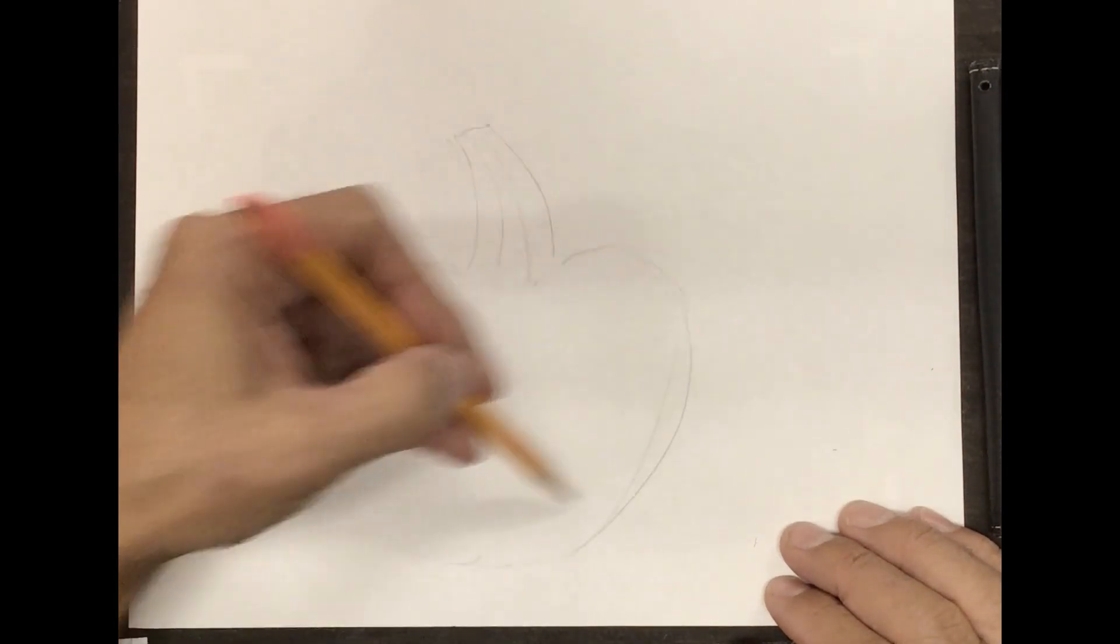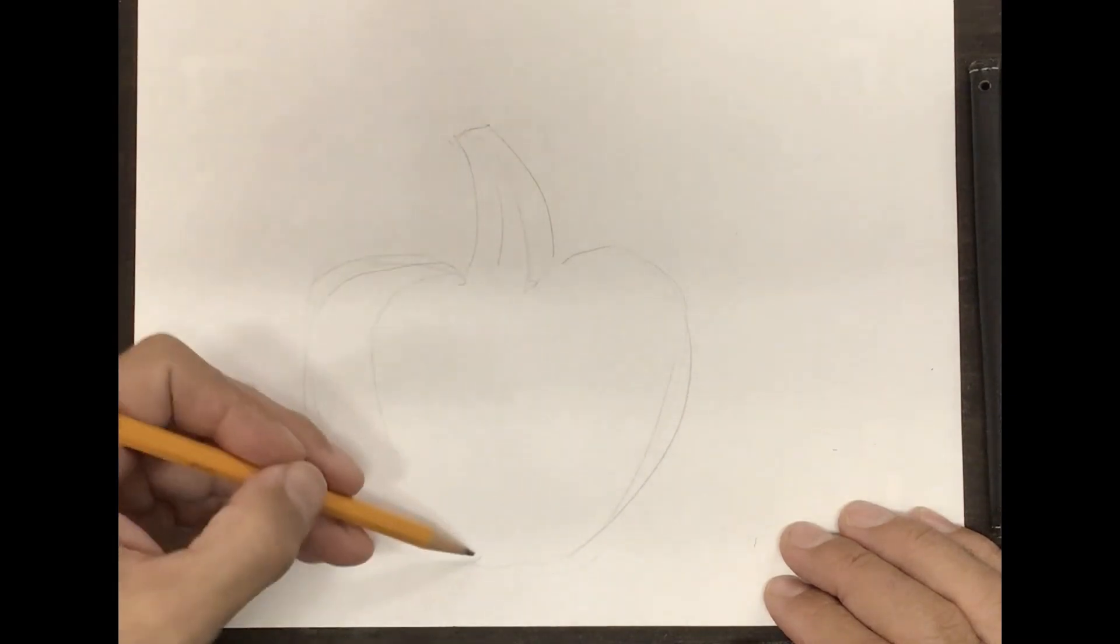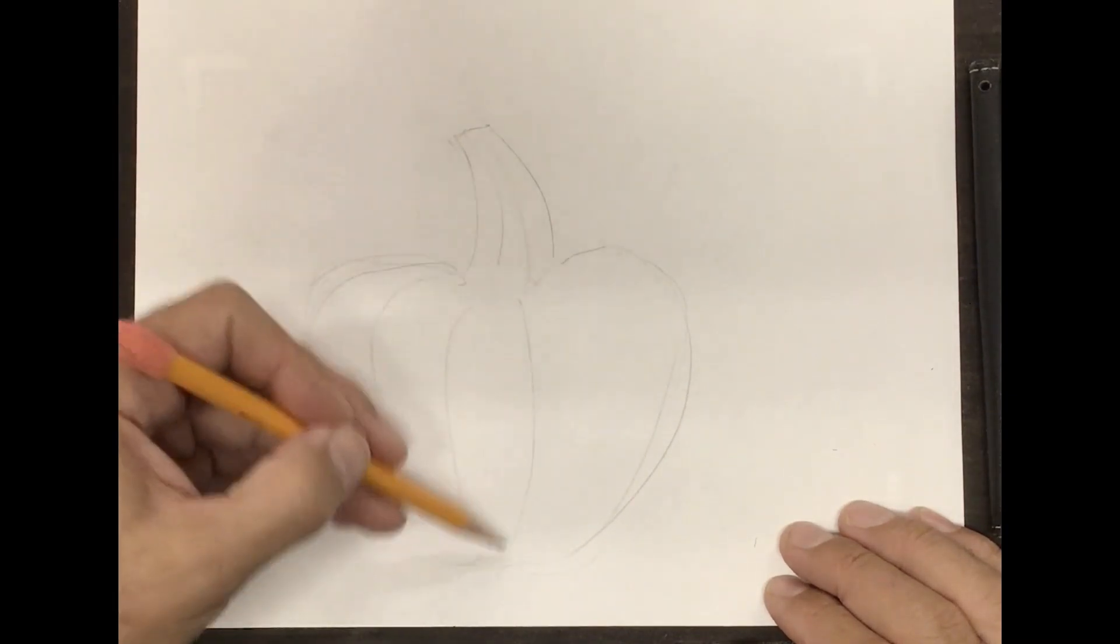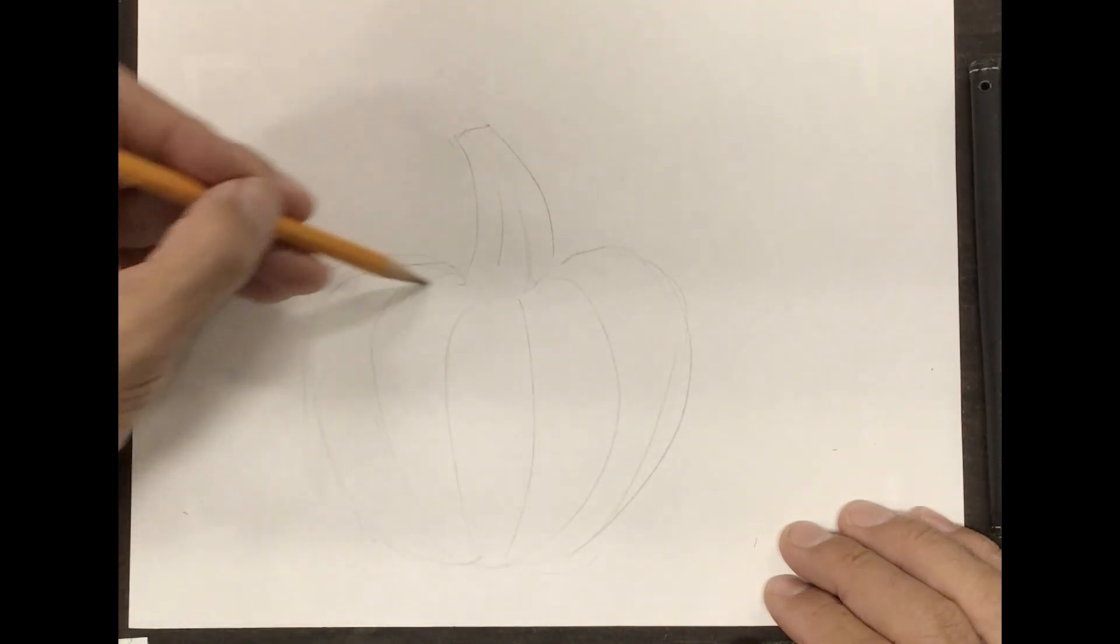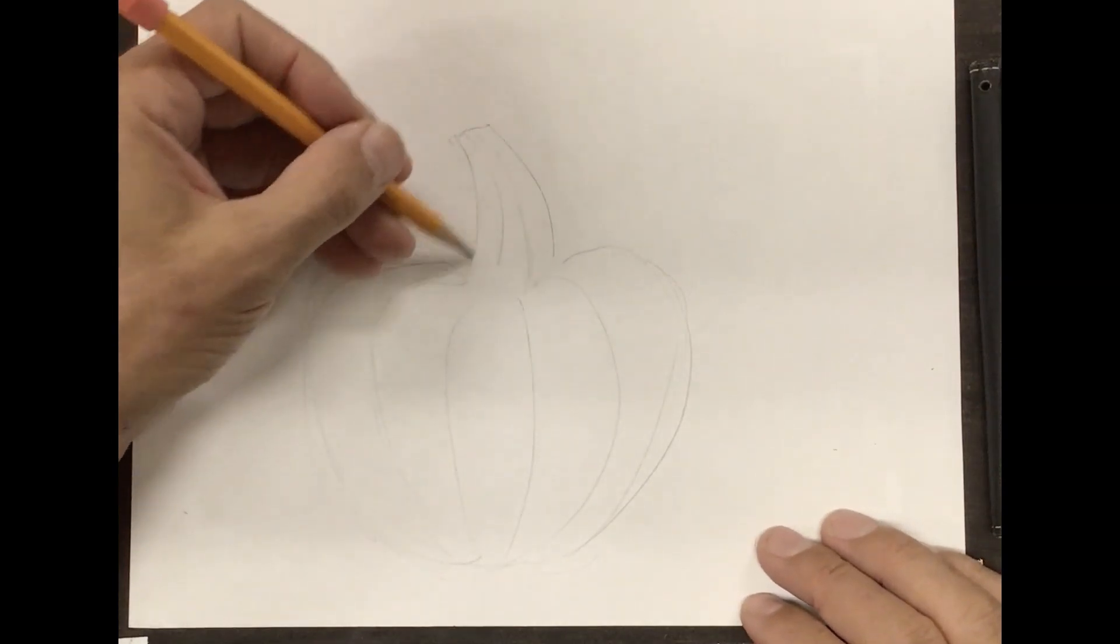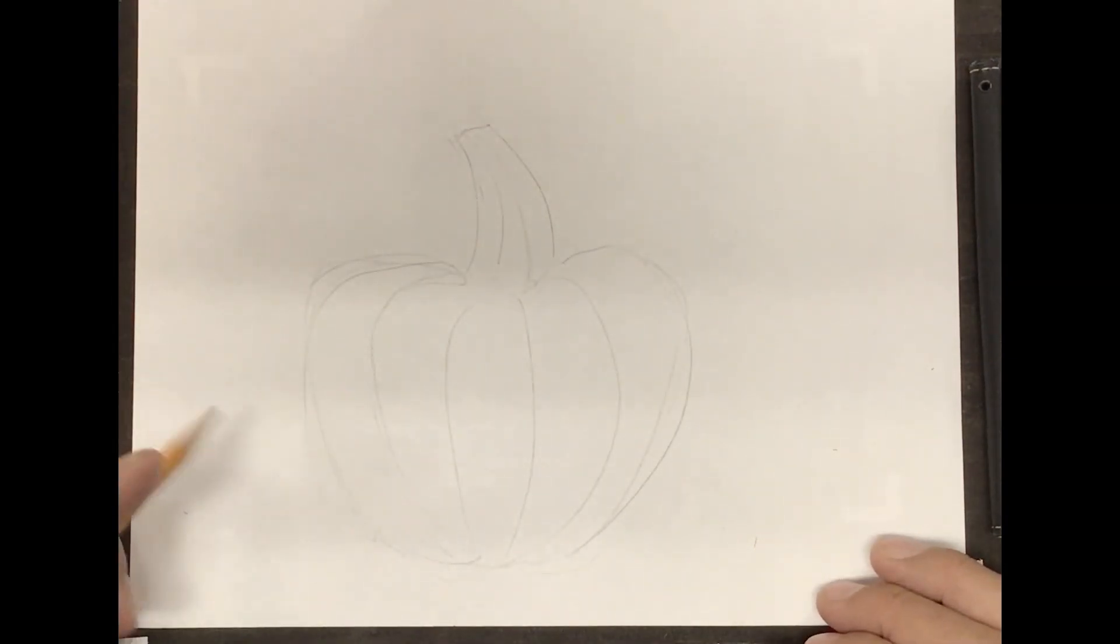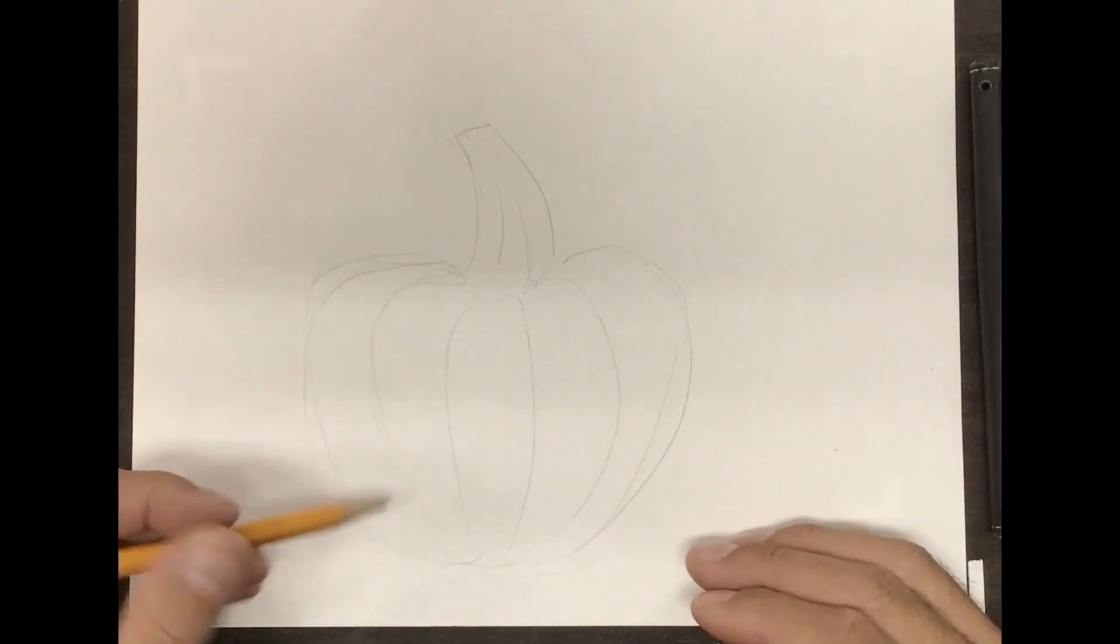You could do this big or you could do little thumbnails. I'm just gonna do one right here because I already kind of know what I want to do. So I did a pumpkin, but I still need to plan out where the line is gonna go.